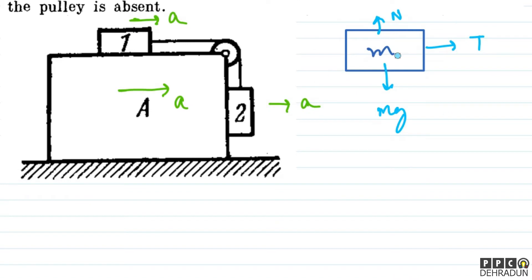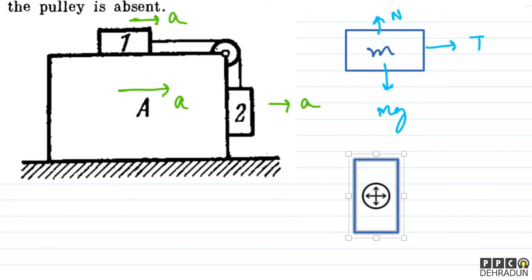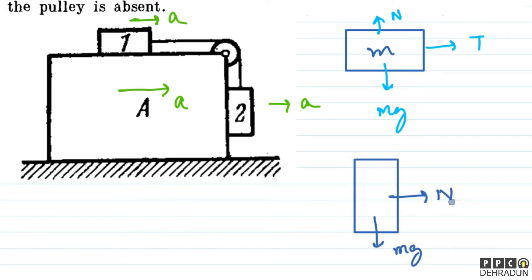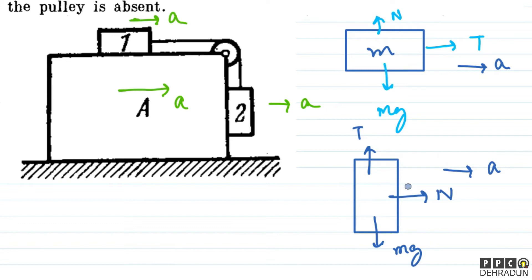This is not the complete free body diagram of block 1. Now let's talk about block 2. Block 2 has weight mg downward, normal force in the forward direction, and tension upward. Block 1 accelerates towards the right with acceleration 'a', and block 2 also accelerates towards the right with 'a'. Both experience friction, which I have not yet shown.